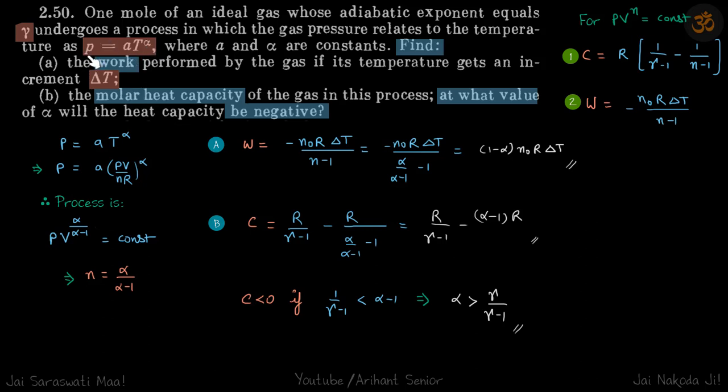Our gas is undergoing a process P = αT^4. We need to find the work if temperature is increased by ΔT, the molar heat capacity, and at what value the molar heat capacity will be negative. Let's start with our relation and get it in the form of pressure and volume.